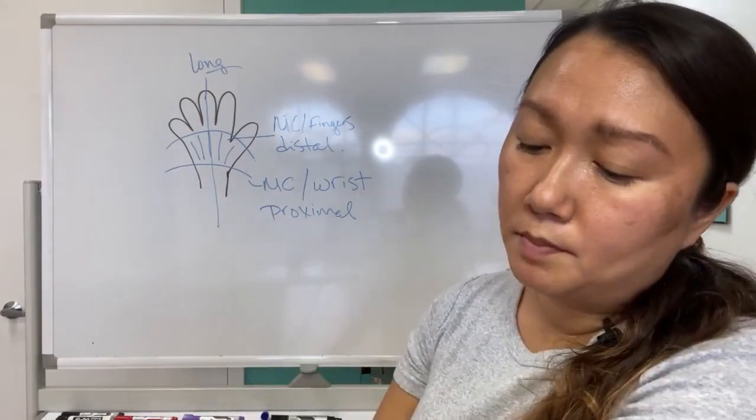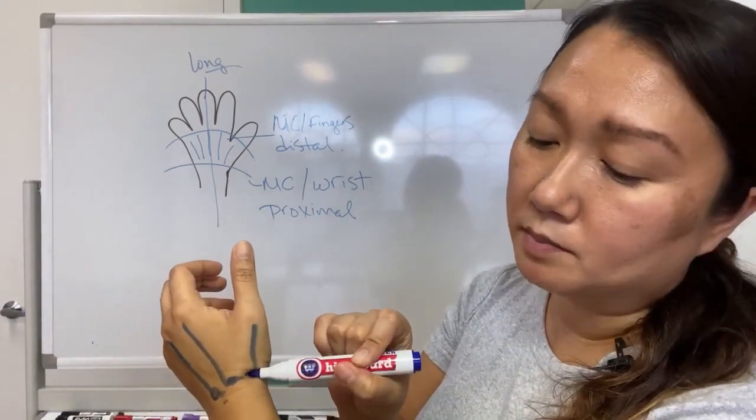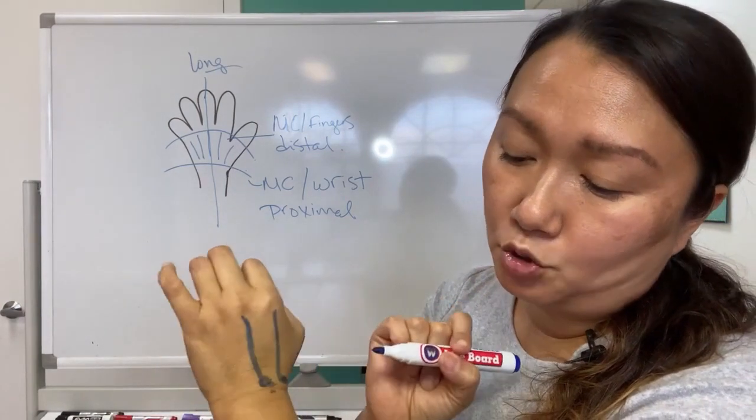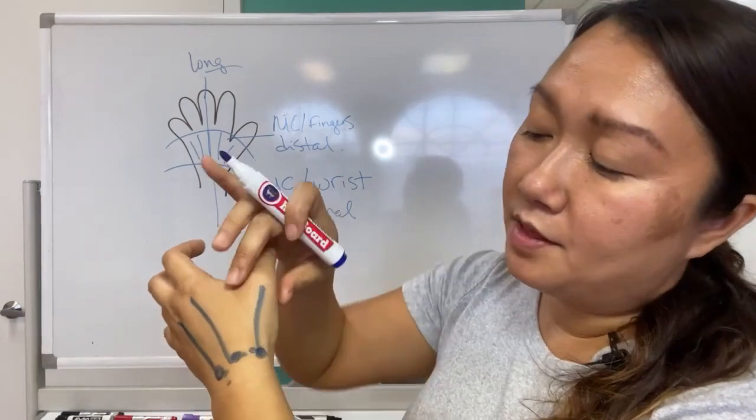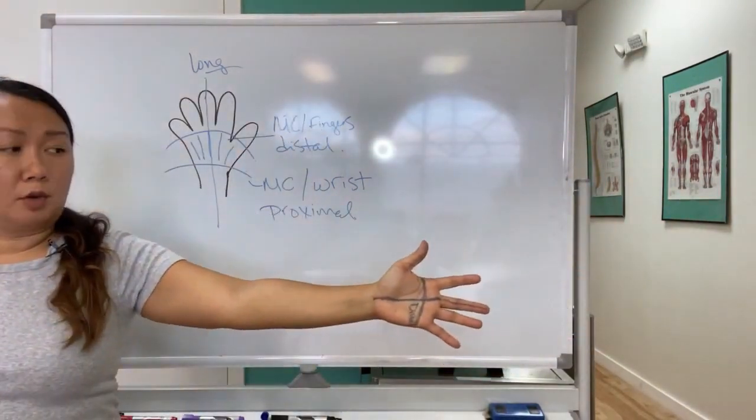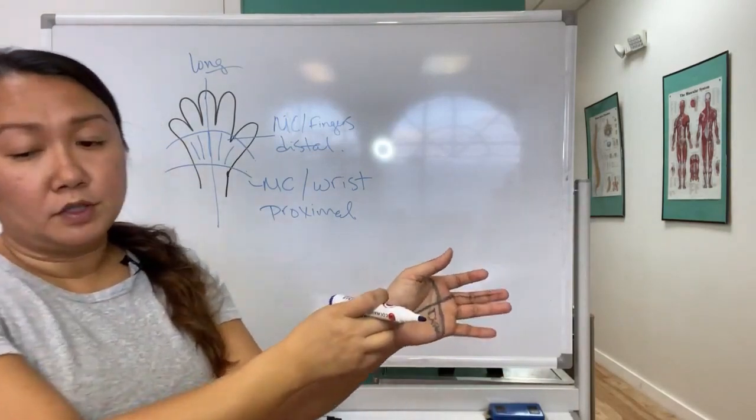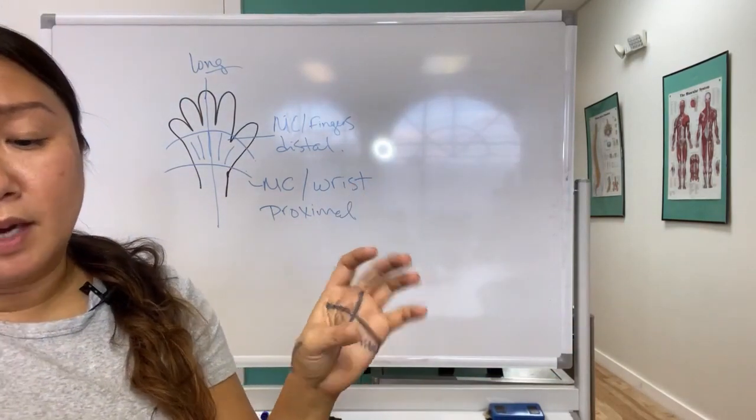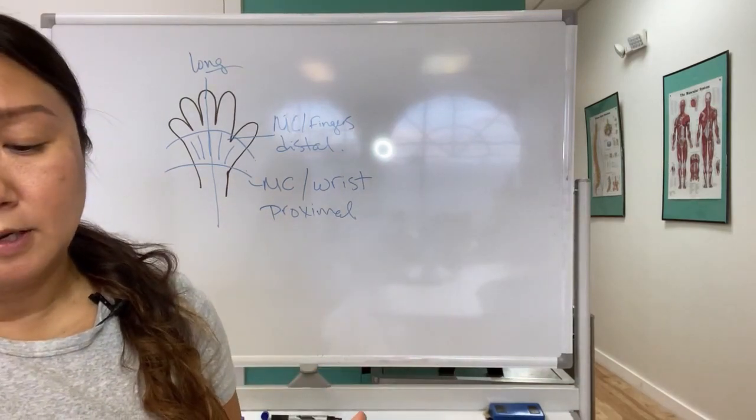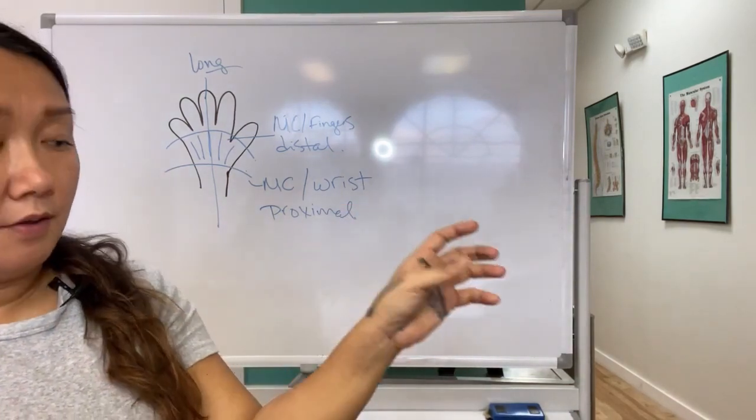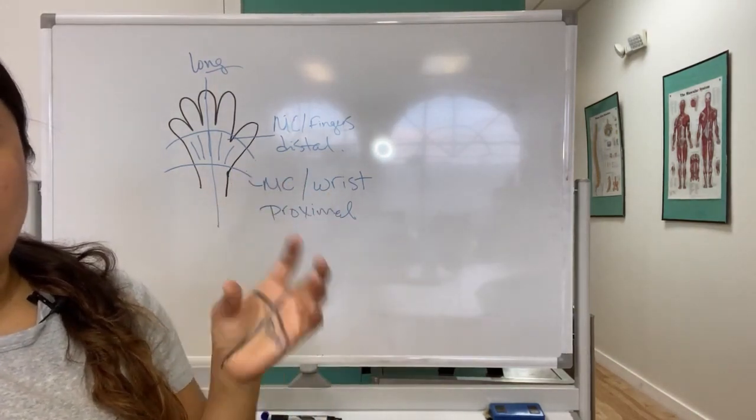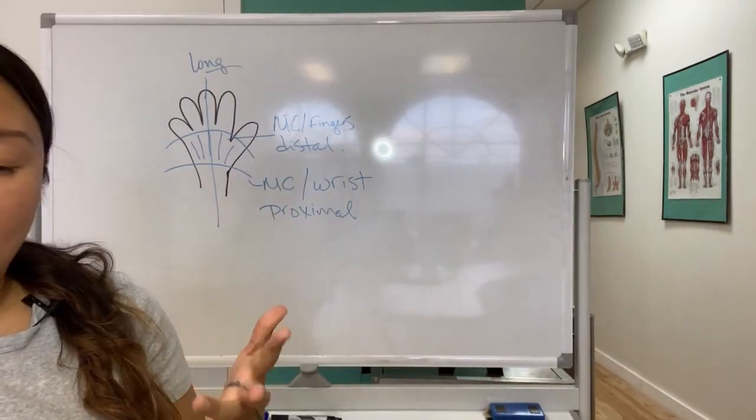So the first metacarpal base, the difference is because it's CMC, it only articulates with the trapezium. And the thumb, this bone - you know, normally we talk in anatomical terminology. Well, that first metacarpal is rotated about 90 degrees as compared to the other metacarpals. And of course, that CMC joint has a concave and convex surface.